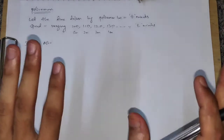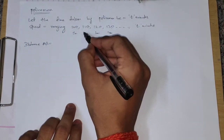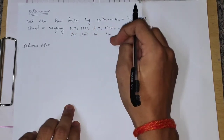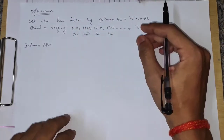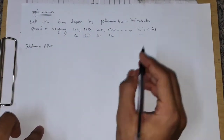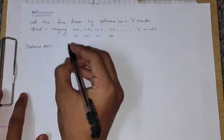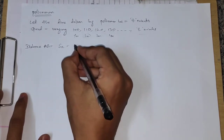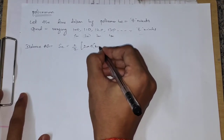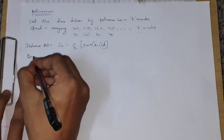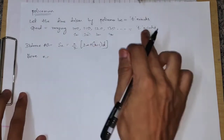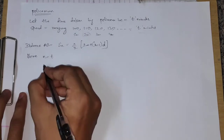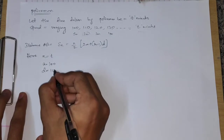The total distance covered by the police up to T minutes is the sum of the AP. Using the formula: Sn = n/2 × (2a + (n−1)d), where n = T, a = 100, d = 10. So distance = T/2 × (2×100 + (T−1)×10) = T/2 × (200 + 10T − 10) = T/2 × (190 + 10T).